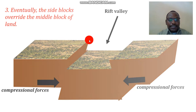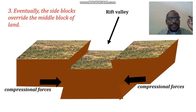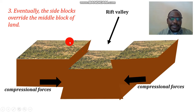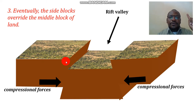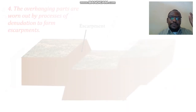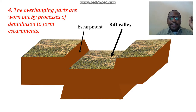Notice the overhanging parts at the sides — they are very sharp and cannot form escarpments on their own. So the process of denudation, whether through mass wasting or erosion, must take place. This gives us the complete rift valley with properly formed escarpments, after those overhanging parts have been worn out. That is how it is formed.